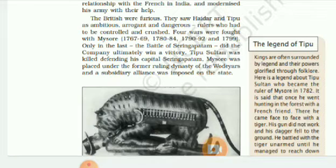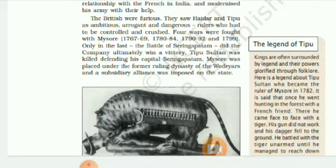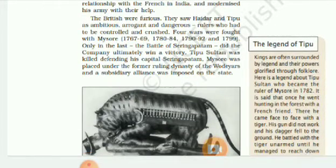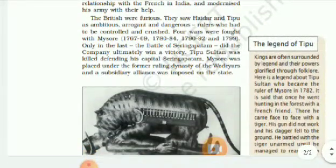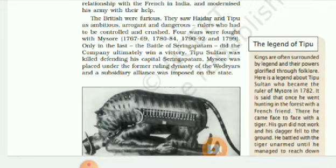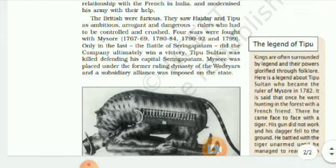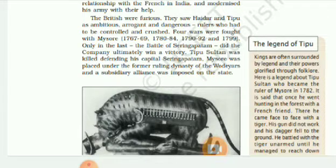In 1771, when the Marathas attacked Hyder Ali, the British did not come to his help. Hyder Ali died during the war. His son Tipu Sultan continued the war, which finally came to an end in 1784 with the signing of the Treaty of Mangalore.